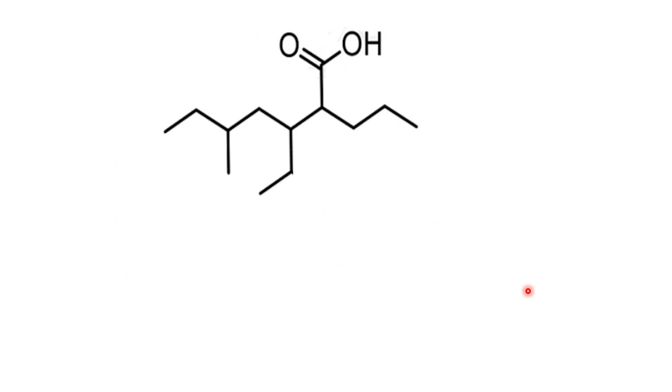So far, we've been working with condensed formulas and simpler acids. Now, let's level up with a skeletal formula that looks more complex at first sight. Here's the structure. As always, the carbon of the carboxyl group is carbon number 1.